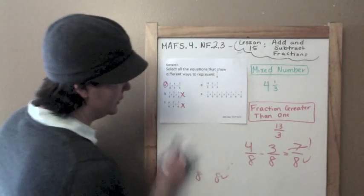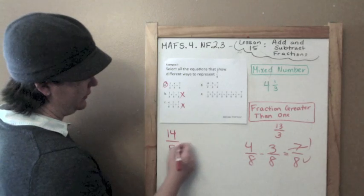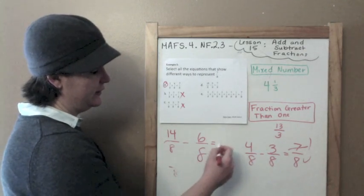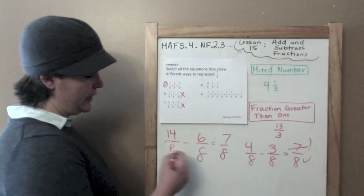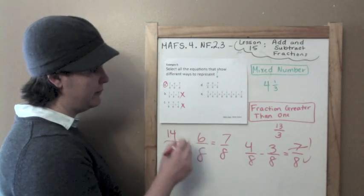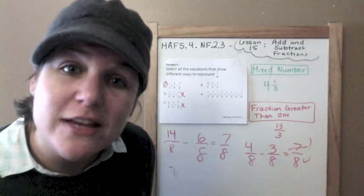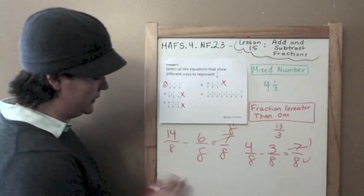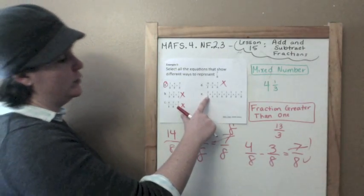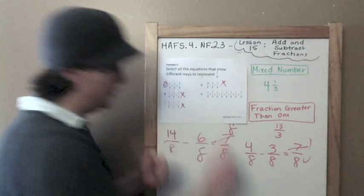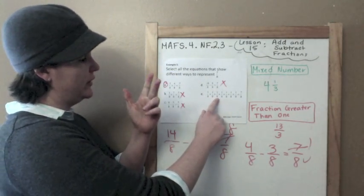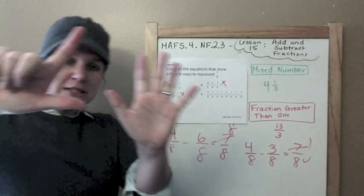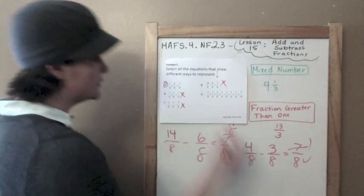I'm going to make some space. D says fourteen-eighths minus six-eighths equals seven-eighths. The denominator is eight. But fourteen minus six — last time I checked, that was eight, not seven. So D is wrong. Lucky E: one-eighth plus one-eighth plus one-eighth plus one-eighth plus one-eighth plus one-eighth plus one-eighth equals seven-eighths. That is correct. E is right.